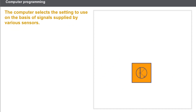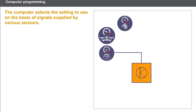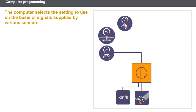The computer selects the setting to use on the basis of signals supplied by various sensors. The choice of driving setting is determined by the driver's style of driving, based on the following information: accelerator pedal position and speed, and vehicle speed.